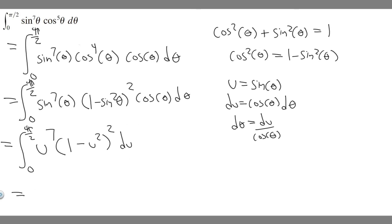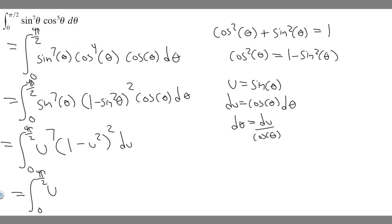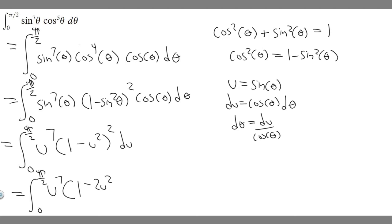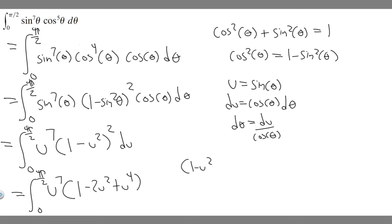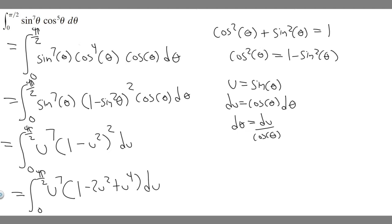Let's simplify further. Expanding (1 − u²)², which is just (1 − u²)(1 − u²) using FOIL, gives us 1 − 2u² + u⁴. So the integral becomes the integral from 0 to π/2 of u⁷ · (1 − 2u² + u⁴) du.